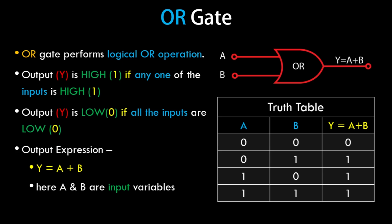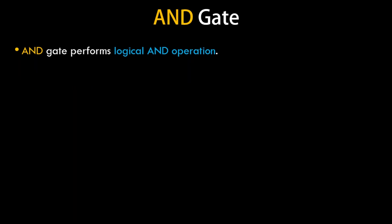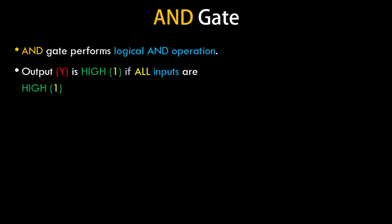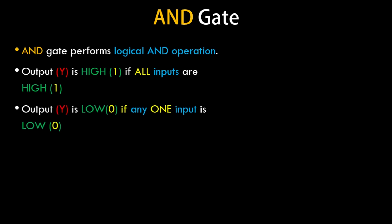The AND gate performs a logical AND operation. In the AND gate, the output is high if all the inputs are high — that is, the output is 1 only when all inputs are 1. The output is 0 or low if any one input is 0 or low.